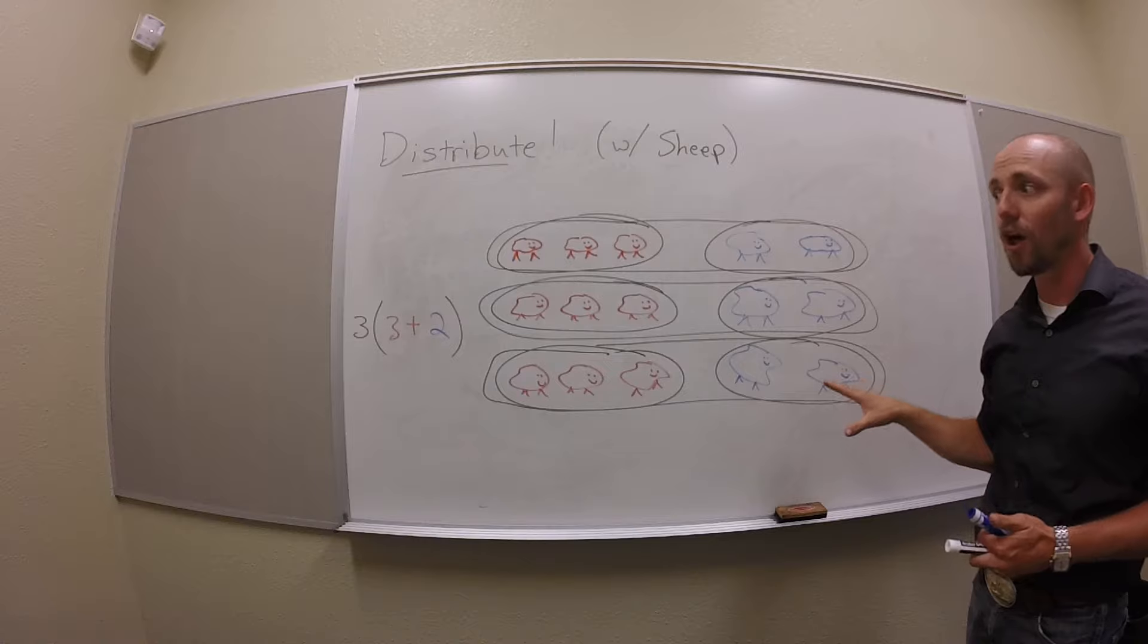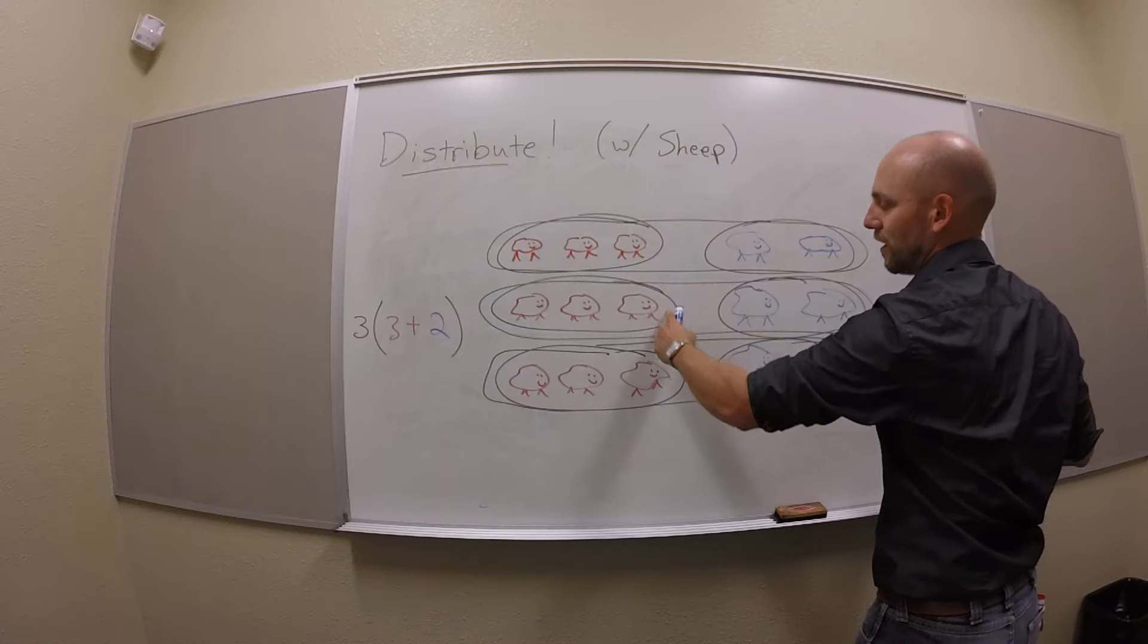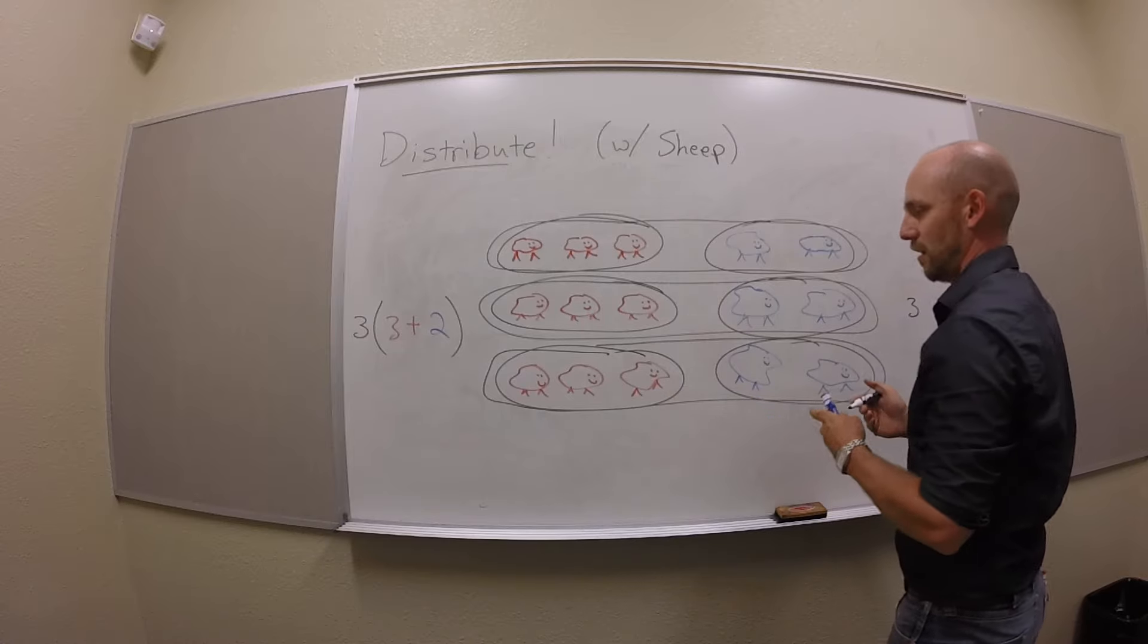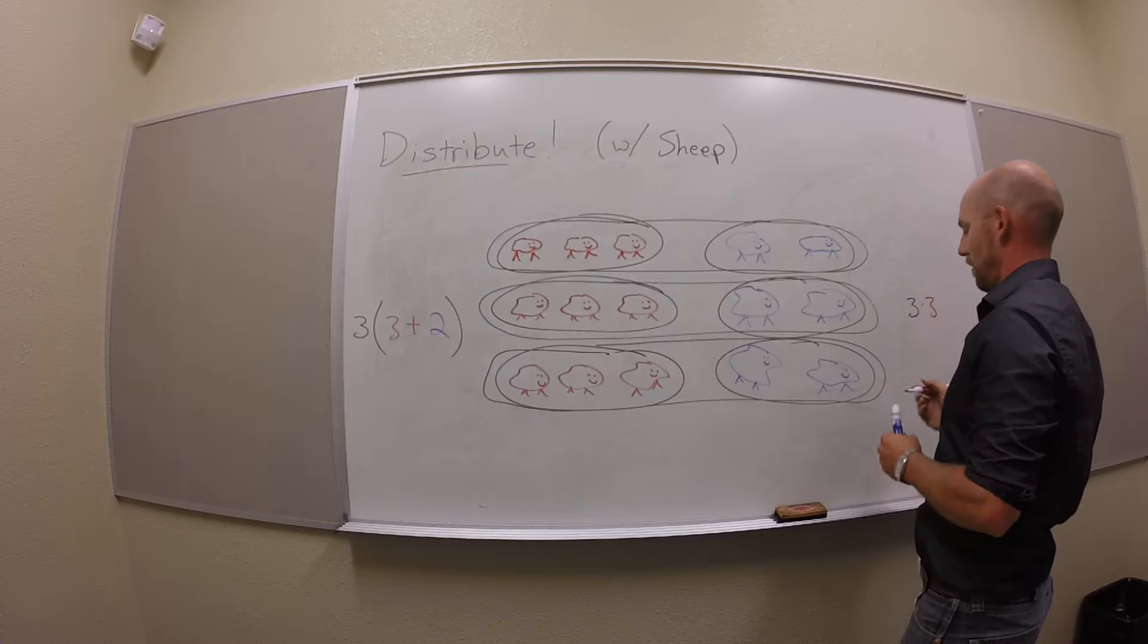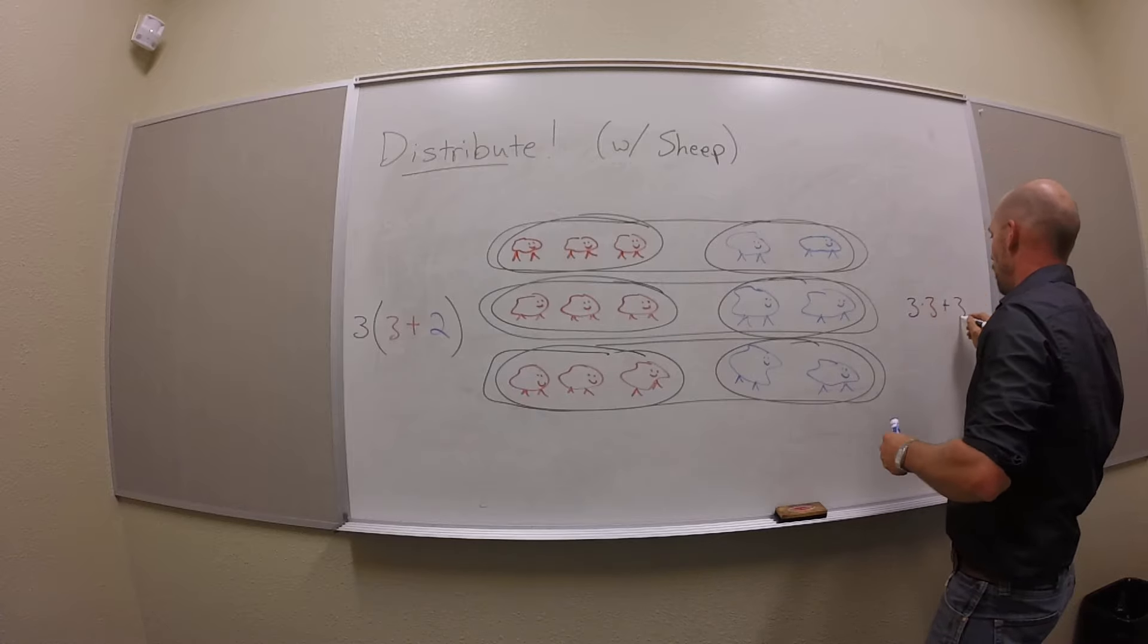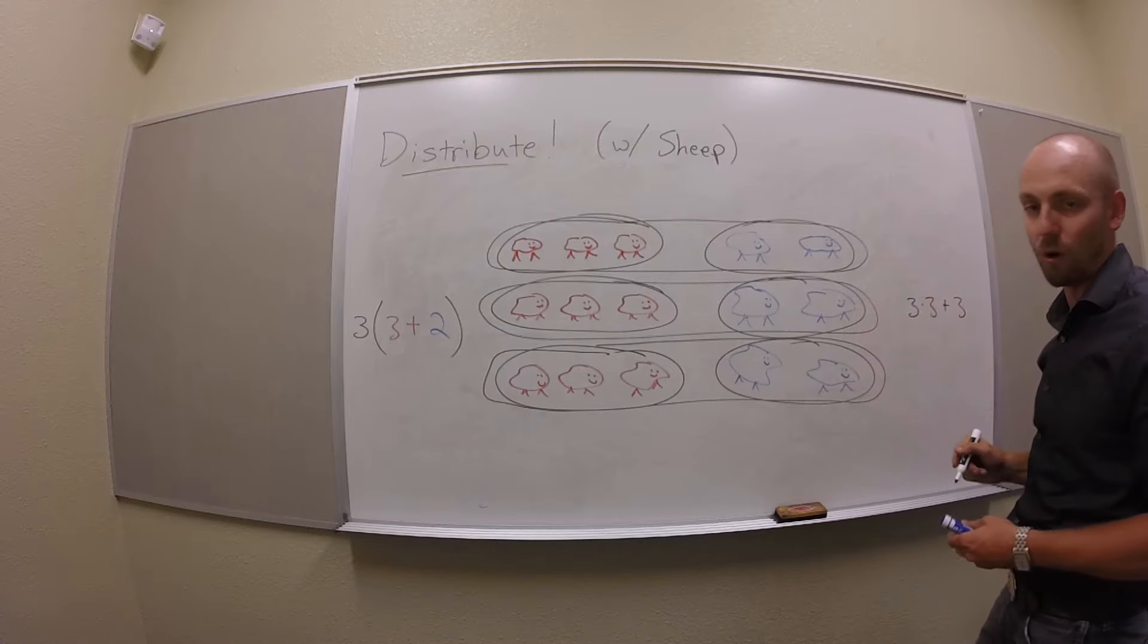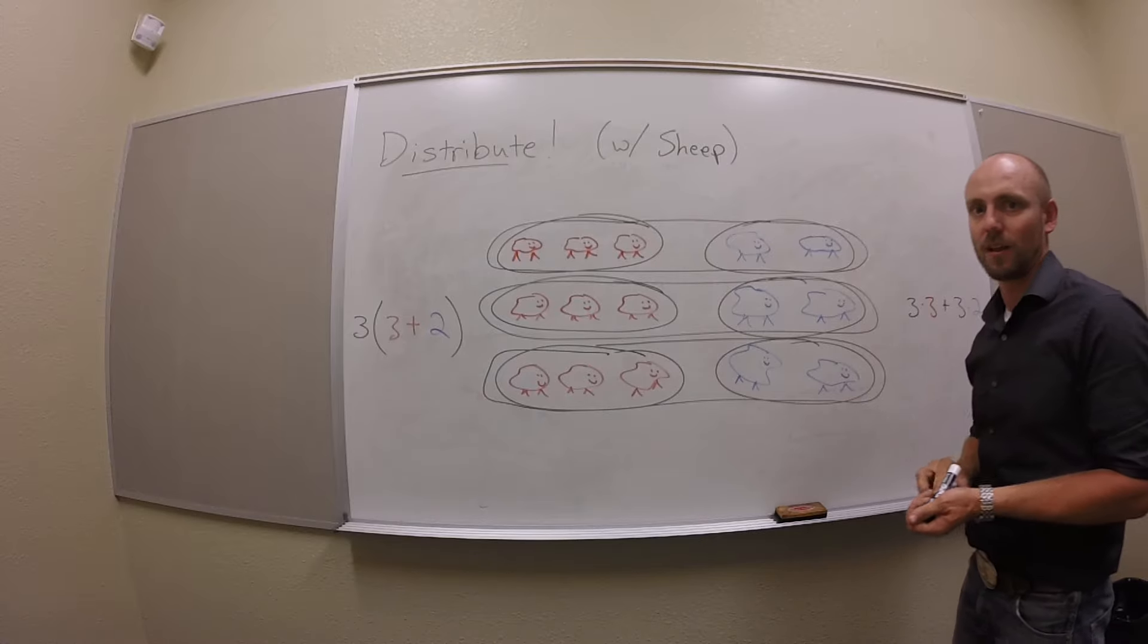It's still the same flock of sheep, but now I've got, let's see, there's these three groups, right? Each of which is made of three red sheep. And then also there's three more groups, one, two, three more groups, each made of two blue sheep. You guys see that?